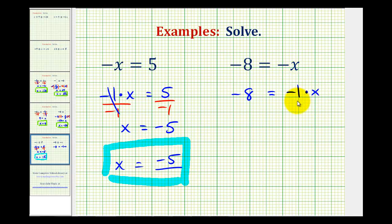And now, again, we'll have to divide both sides by negative 1 to isolate x. So on the right side, we do have x. And on the left side, we have negative 8 divided by negative 1, which would be positive 8.